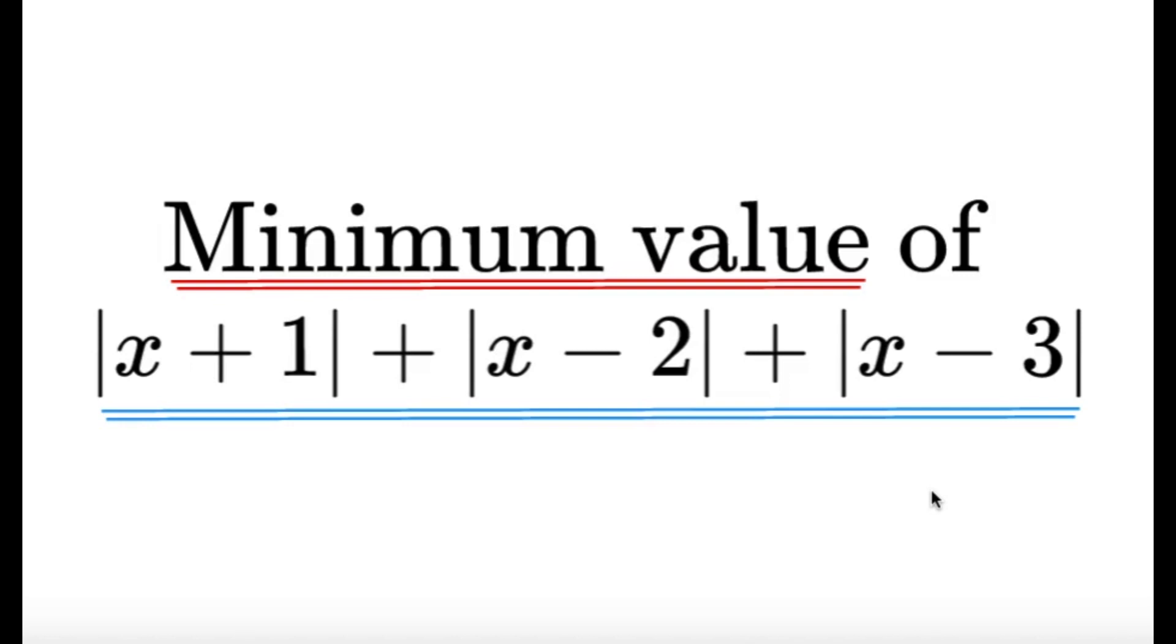For this one, find the minimum value of the expression: absolute value of x plus 1 plus absolute value of x minus 2 plus absolute value of x minus 3. As usual, pause this video if you'd like to give this item a try, but if you're done, let us dive into the solution.